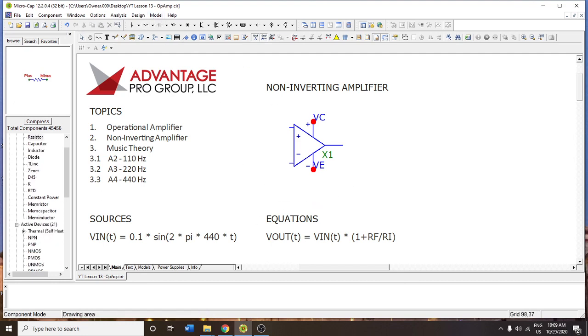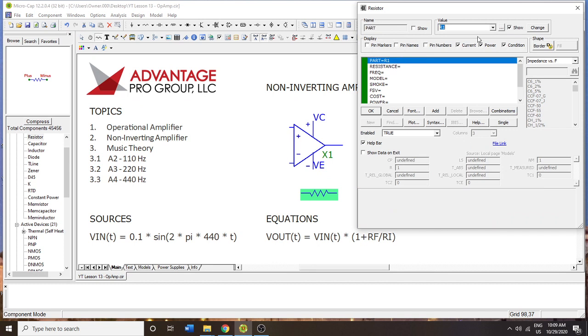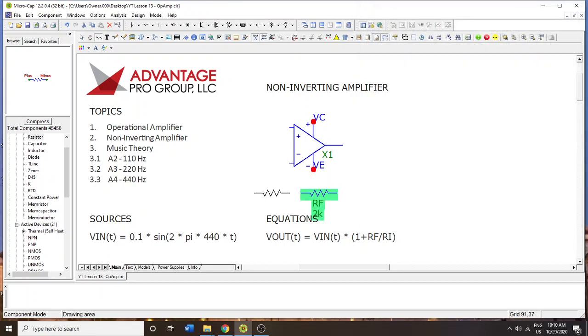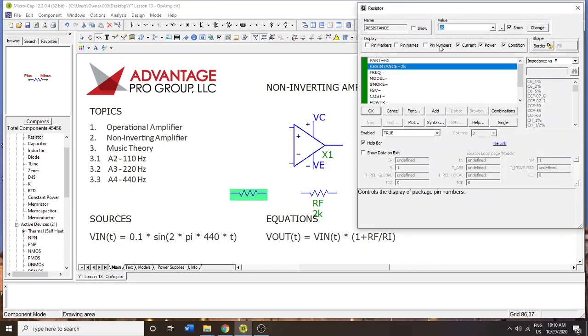Now we're going to do the resistances. The feedback resistance is important. We're going to call that RF and set the resistance value to 2K. Now the input resistance. We're going to set that to 1K and call it RI.